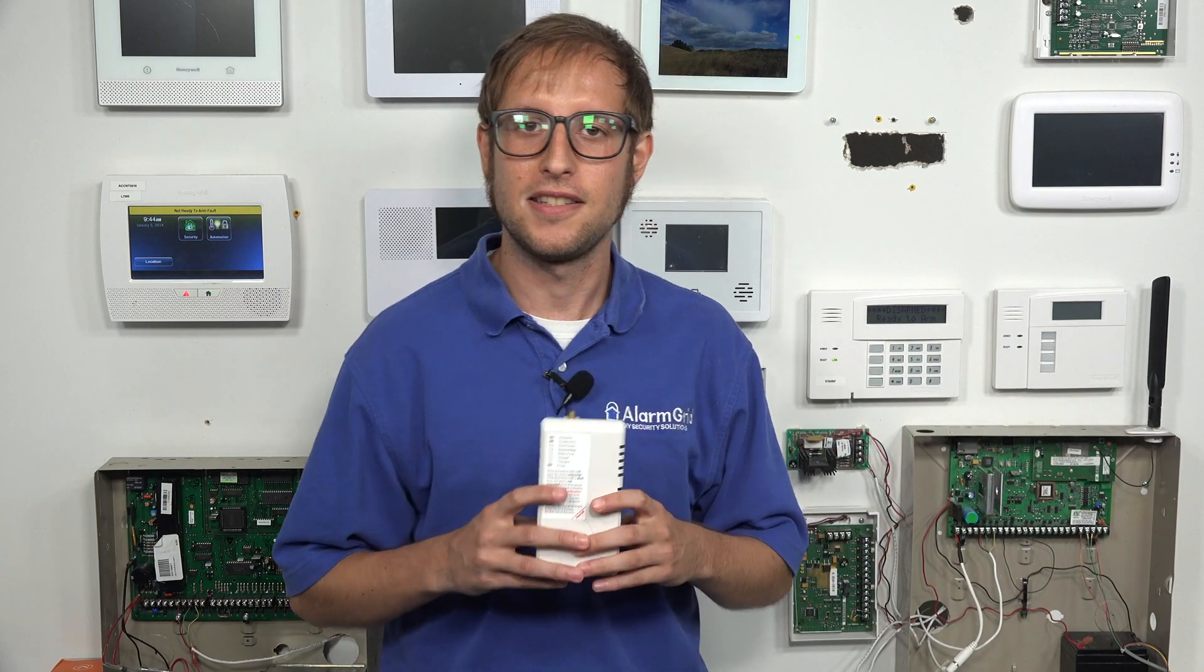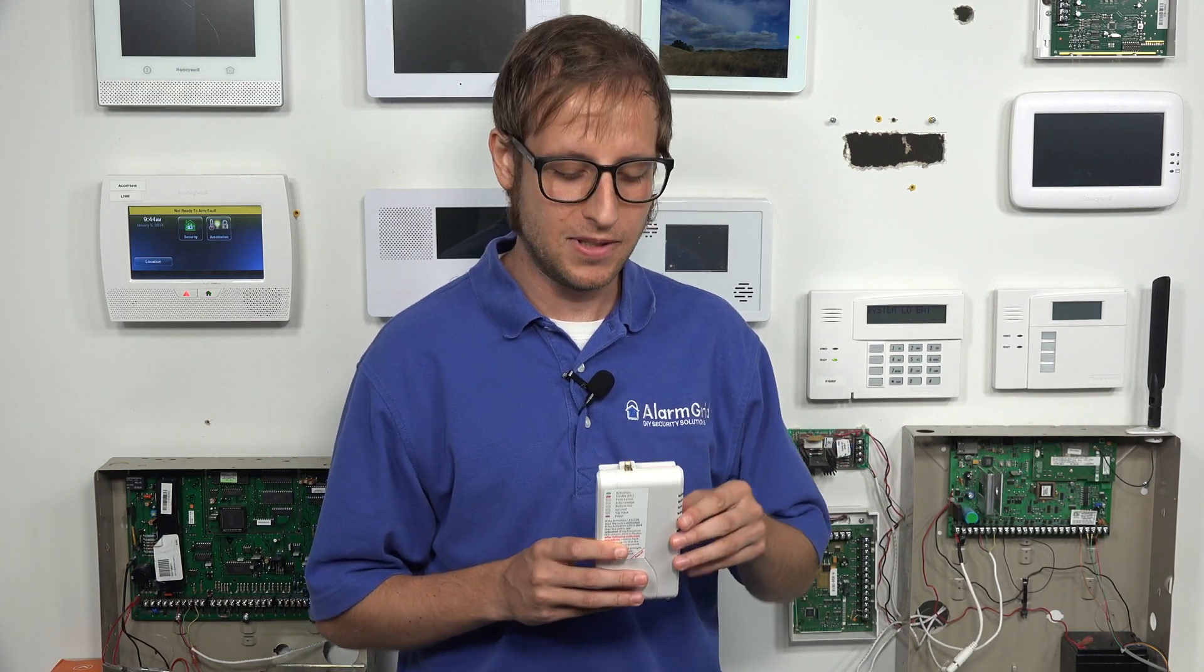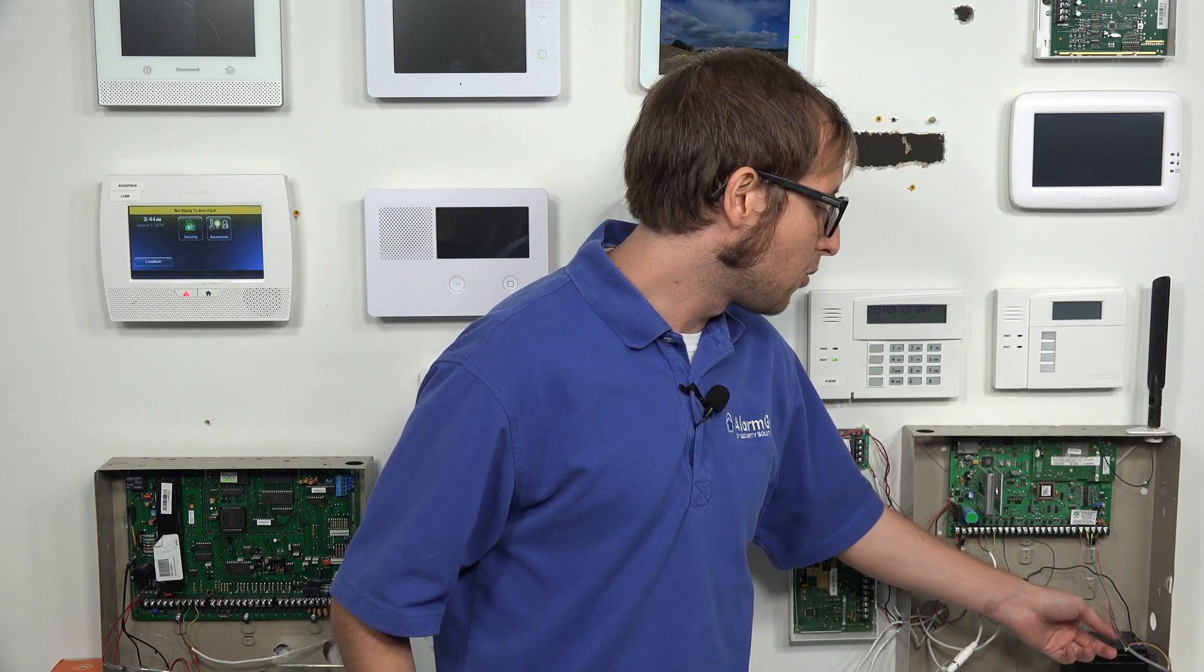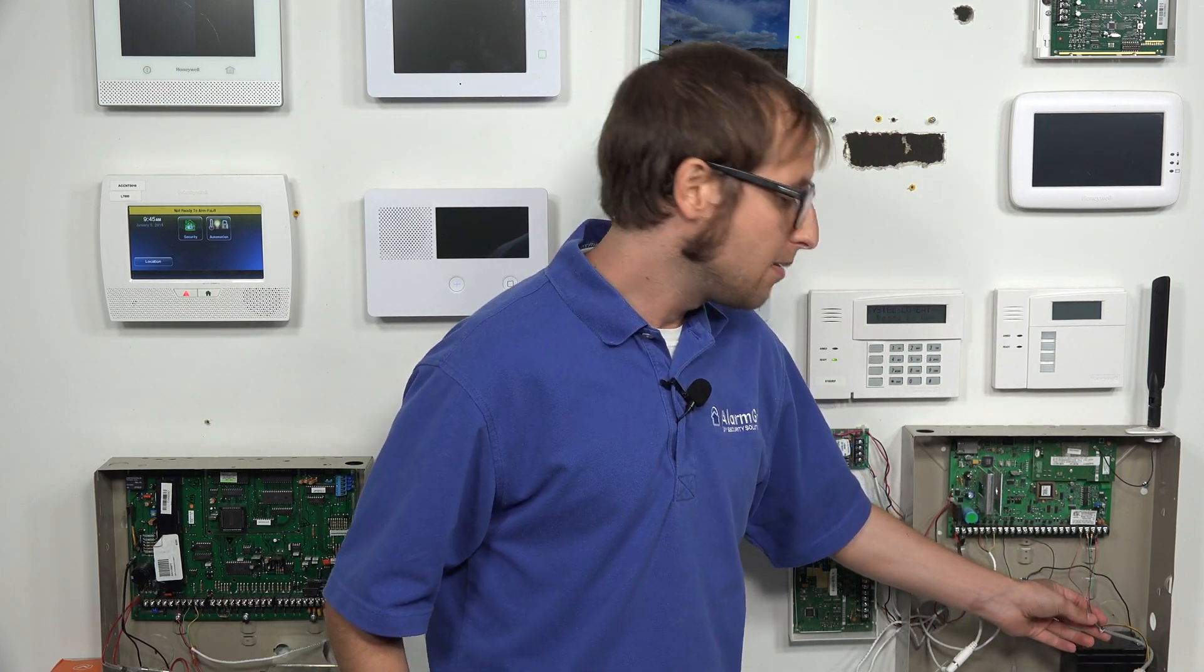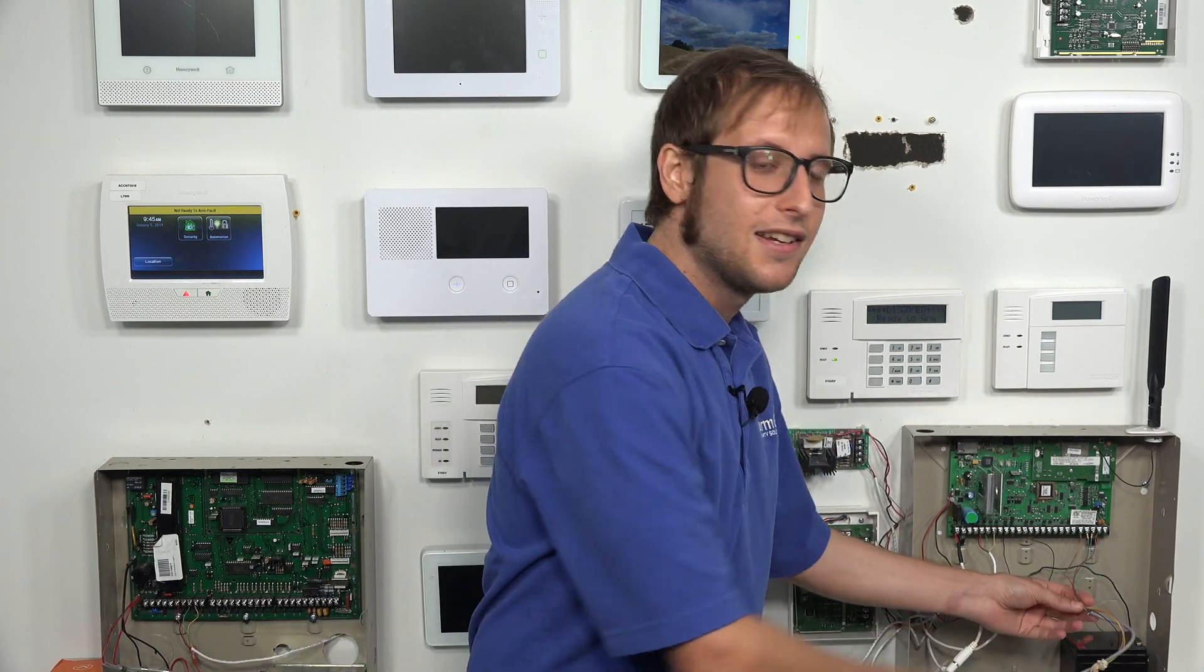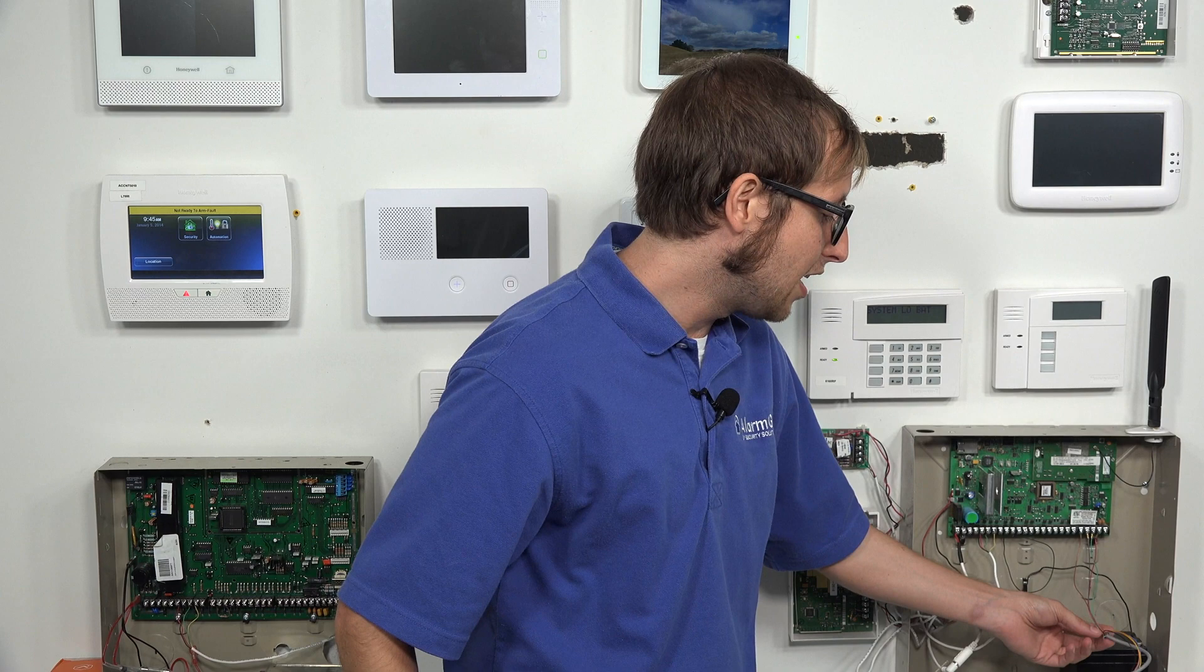We have our Telguard TG1 Express here. The antenna is not connected at this time. The main reason you would use the onboard terminals for power instead of the standard RJ31X connection is because the power connections for the RJ31X cable might have been cut, which we're simulating using this rubber band. We have our cut cables pulled back, so we only have four remaining cables.